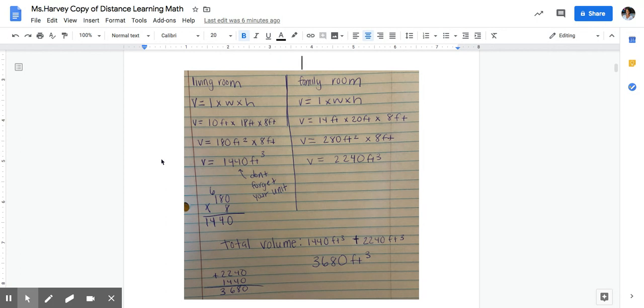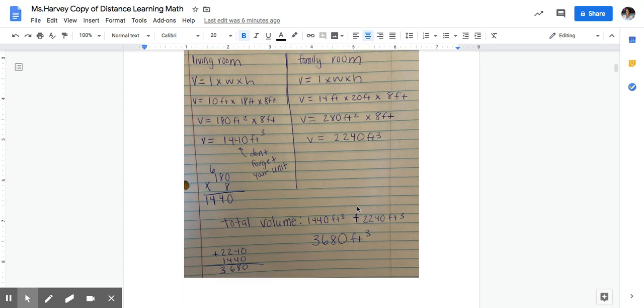So that means that at the end I have to add together those two volumes. We are adding here and not multiplying because volume is additive. That means if we're trying to figure out the volume of two separate figures and we're adding them together, we're trying to figure out the total volume, we'll do addition to do that. So I'm doing 1440 feet cubed plus 2240 feet cubed. My final answer should be 3680 feet cubed.